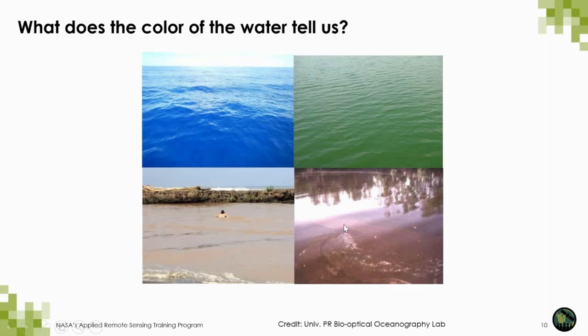The redness of the water reflects the pigment composition of this particular dinoflagellate. This could be considered a red tide, although that term is a generic one; the correct term is harmful algal blooms. In this case, there is also the influence of tannins released from the red mangrove roots surrounding the bay.